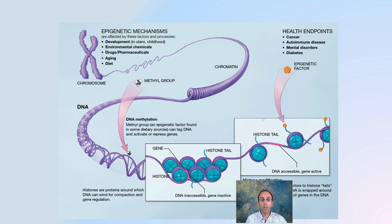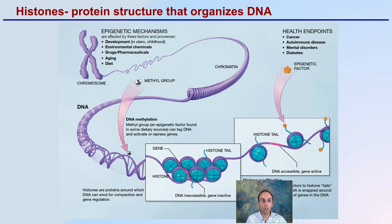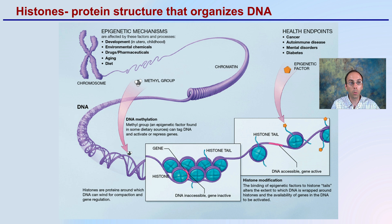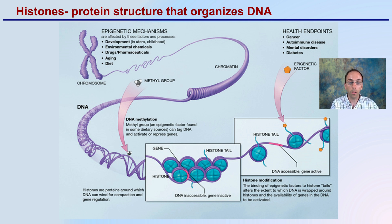When we look specifically at histones — that protein structure that helps organize the DNA — histones are actually very important. So while we have our chromosome, our chromatid, our DNA, and then our histones: think of this — if we have a very long piece of string, it's very easy for it to get tangled. Therefore, histones are little protein structures that allow that DNA to wrap around and help keep it organized.